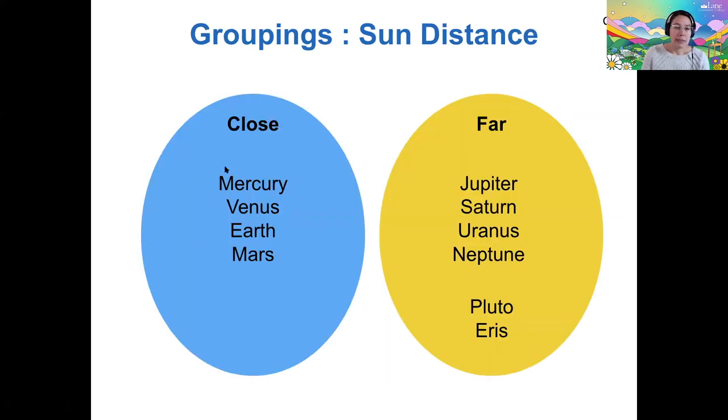So like I said, Mercury, Venus, Earth, and Mars, we call those terrestrial worlds, terrestrial just meaning that they have a land surface. So these are generally composed of rocky materials. They have small atmospheres and they tend to be small.